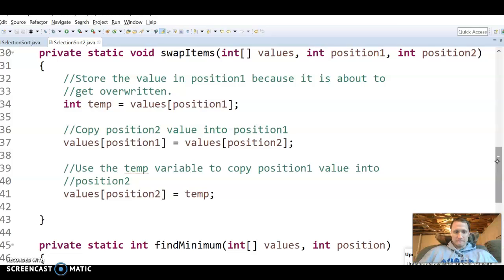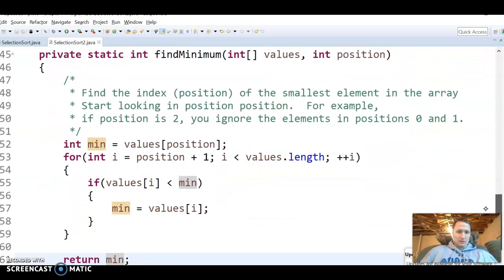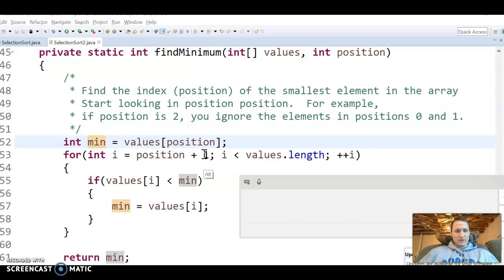Okay, part two was the find min. So a couple challenges here. One, we're searching from this position on. So normally our loop runs right here from zero all the way less than the length, but now we're going to start from whatever position we're on and then one to the right of that.